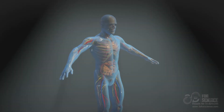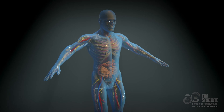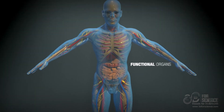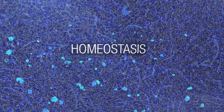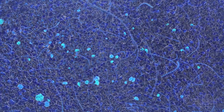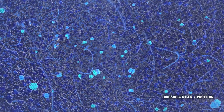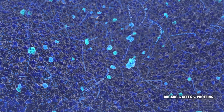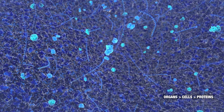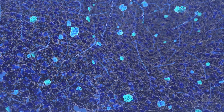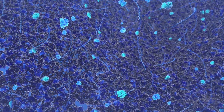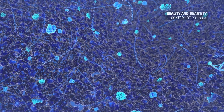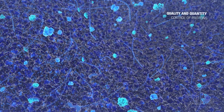The functions of our body are ensured by specialized organs that maintain a constant balance called homeostasis that keeps us healthy. Organs are made and maintained by cells. Proteins are the main functional components of the cells, so the structure and functions of cells, organs, and of the whole body mostly boil down to quality and quantity control of proteins.